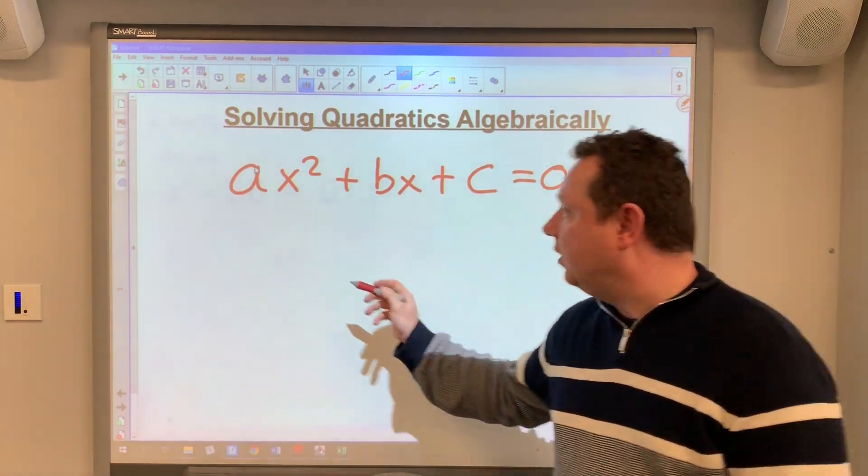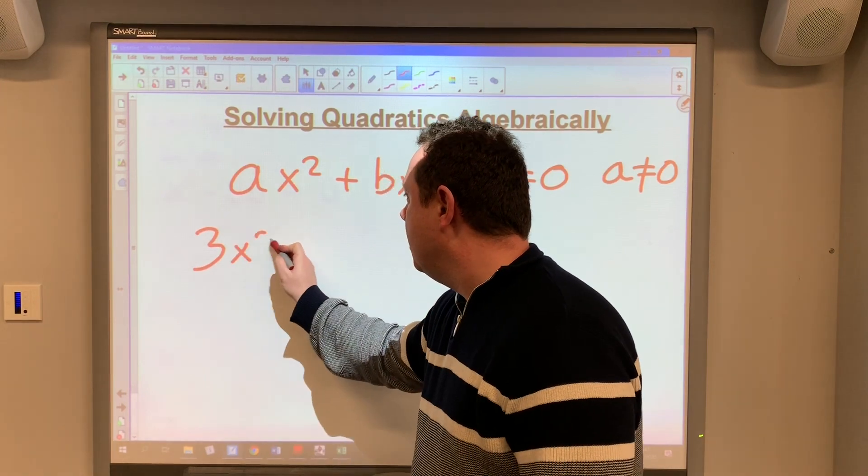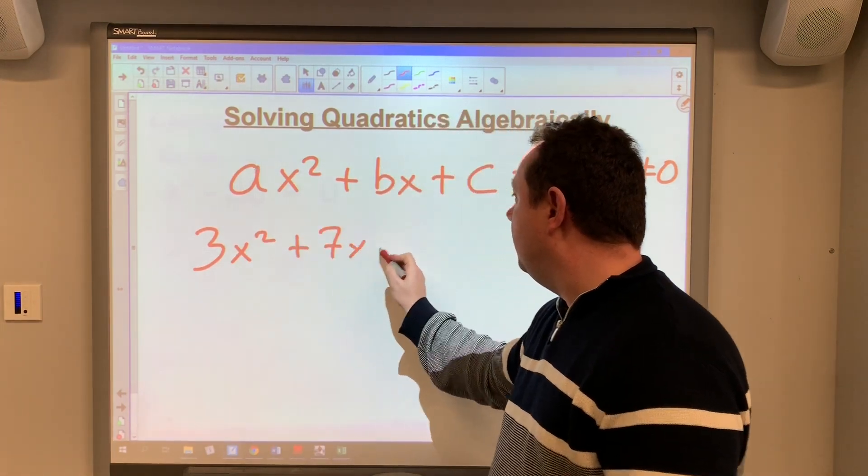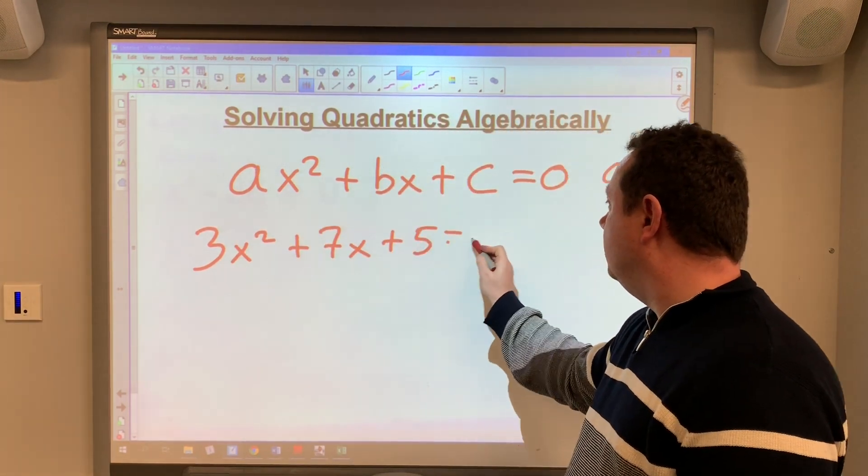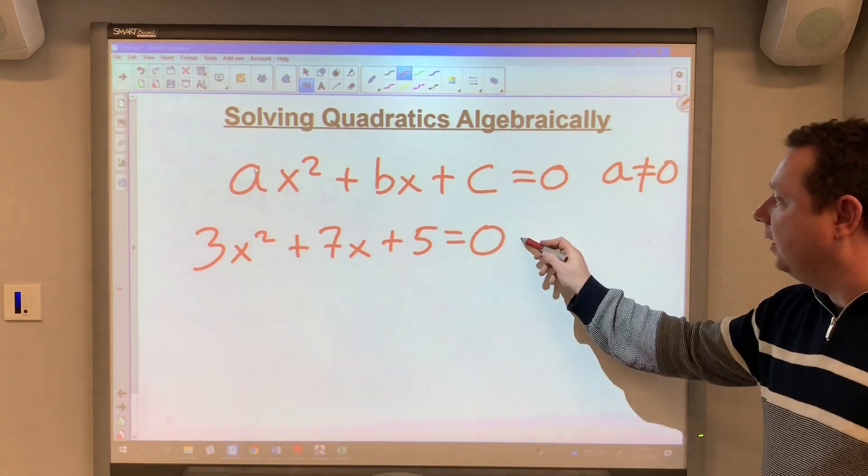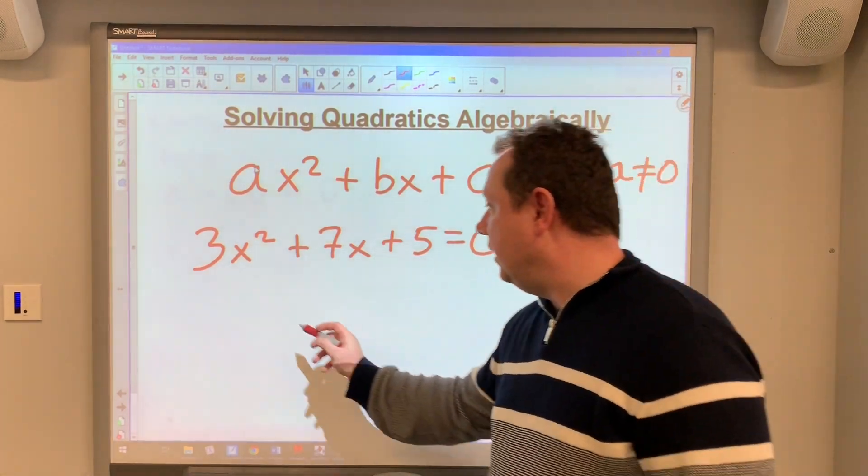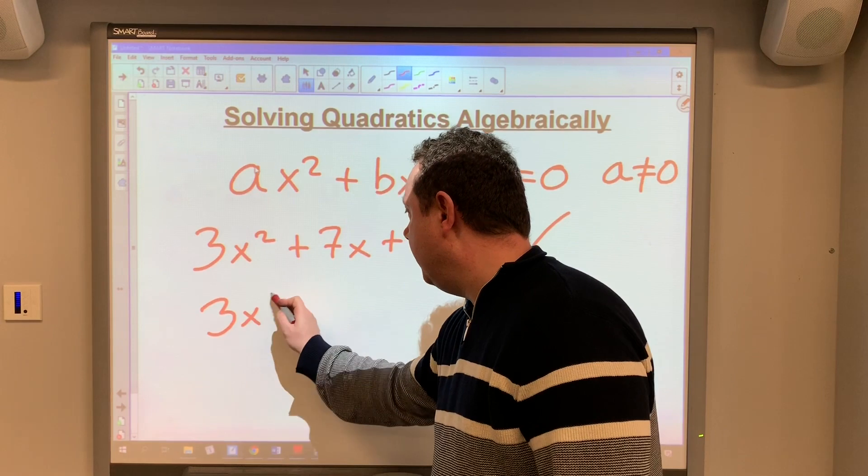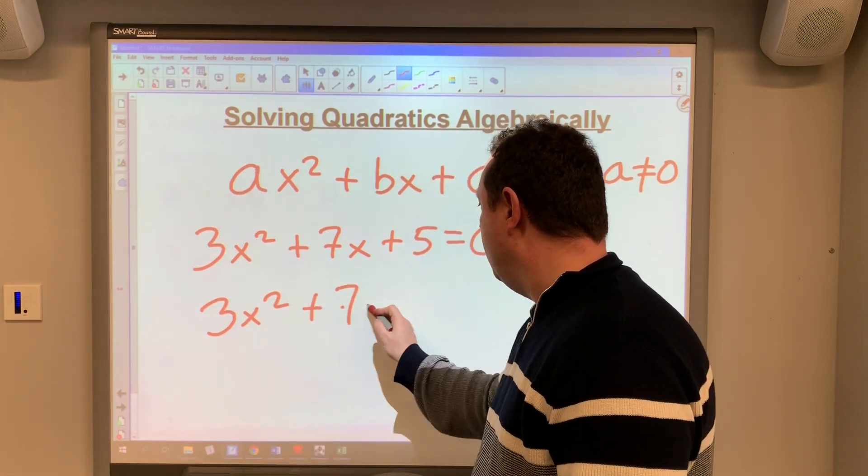An example of a quadratic for instance would be 3x² + 7x + 5 = 0. That's a quadratic, but equally 3x² + 7 is also a quadratic.